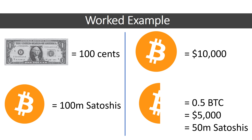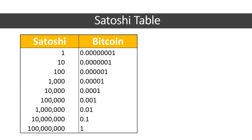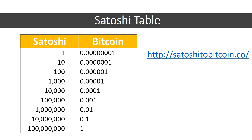Now in terms of satoshis, that 0.5 BTC would be 50 million satoshis, or sats. To wrap up, I've highlighted a simple table showing the satoshi-to-Bitcoin comparison, which hopefully will be a useful reference.